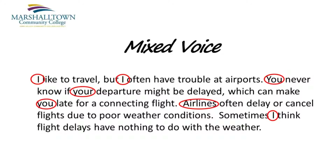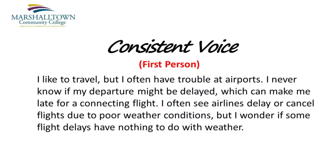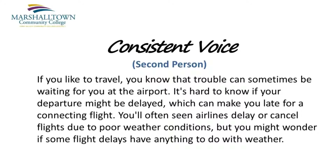This is followed by another sentence in first-person using the word I. The mixed voice here can be easily corrected by simply choosing one point of view to use throughout the entire paragraph. For example, using first-person voice, the paragraph might read like this: I like to travel, but I often have trouble at airports. I never know if my departure might be delayed, which can make me late for a connecting flight. I often see airlines delay or cancel flights due to poor weather conditions, but I wonder if some flight delays have nothing to do with weather. Or using second-person voice, the paragraph might read like this: If you like to travel, you know that trouble can sometimes be waiting for you at the airport. It's hard to know if your departure might be delayed, which can make you late for a connecting flight. You'll often see airlines delay or cancel flights due to poor weather conditions, but you might wonder if some flight delays have anything to do with weather.